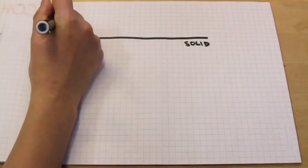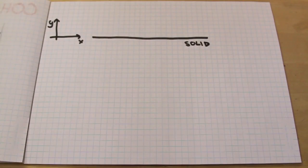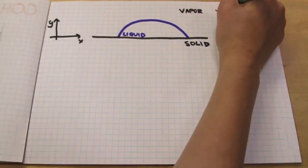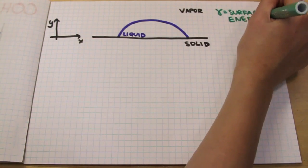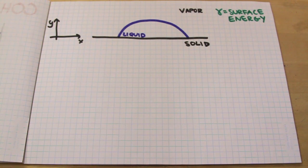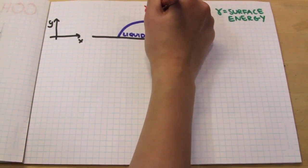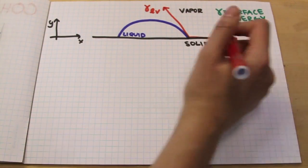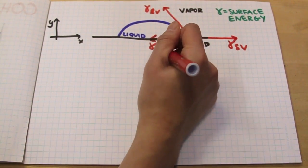When a water droplet contacts a surface, it takes the shape of a spherical cap. We learned that all liquids have surface energy, but actually every single surface has surface energy. A surface can be thought of as the interface between two phases. When we talk about the surface tension of a liquid, we're talking about the surface energy between a liquid and air. There is also the surface energy between solid and air, and the surface energy between liquid and solid.